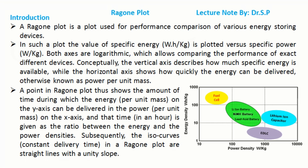A Ragone plot is a plot used for performance comparison of various energy-storing devices. In such a plot, the value of specific energy is plotted versus specific power. Both axes are logarithmic, which allows comparing the performance of very different devices.